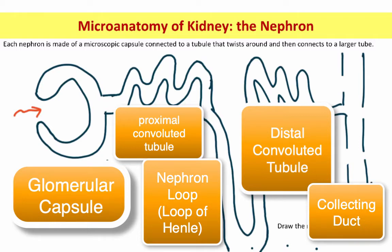That larger tube is called the collecting duct. Each collecting duct is going to plug into a papilla, which is hooked into a minor calyx, which hooks into a major calyx, which empties into the renal pelvis, which then allows urine to flow into the ureter. Each of these little openings is a place where another nephron plugs in to the collecting duct.